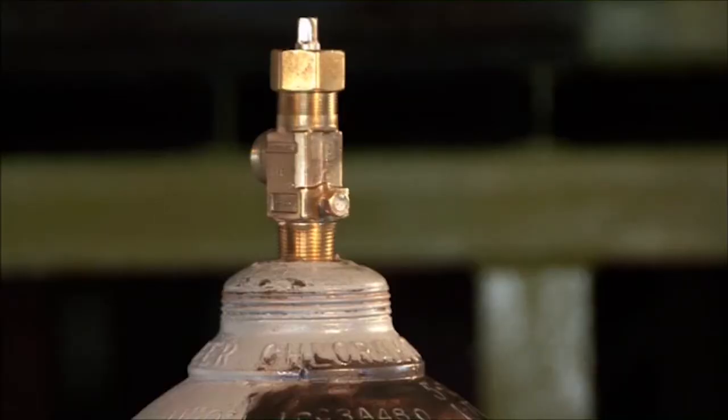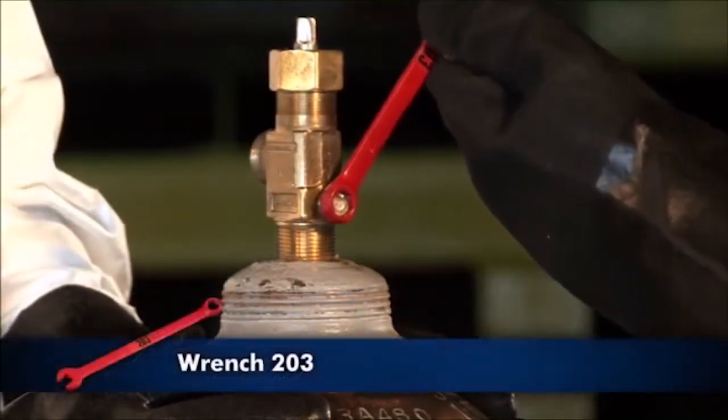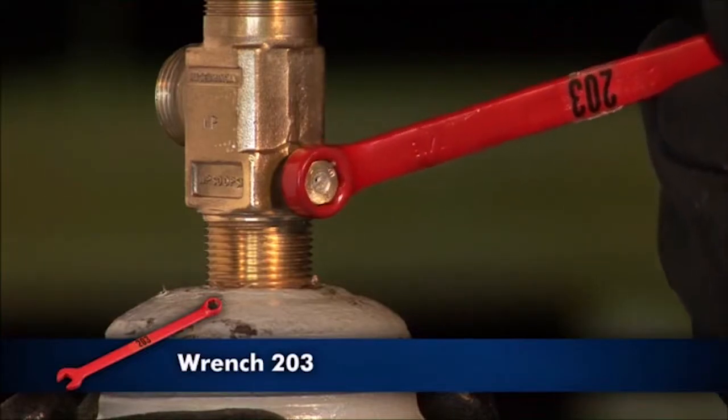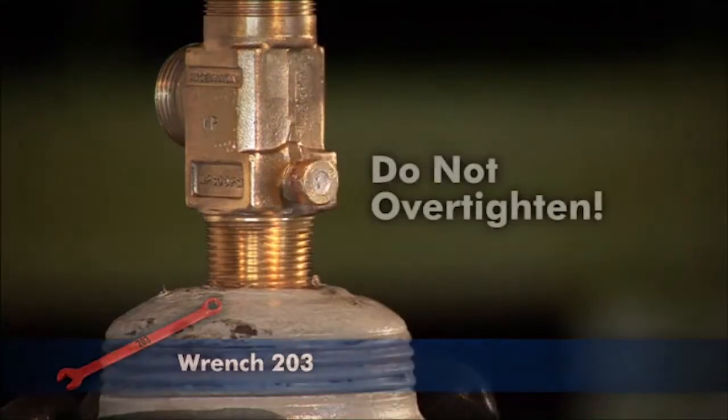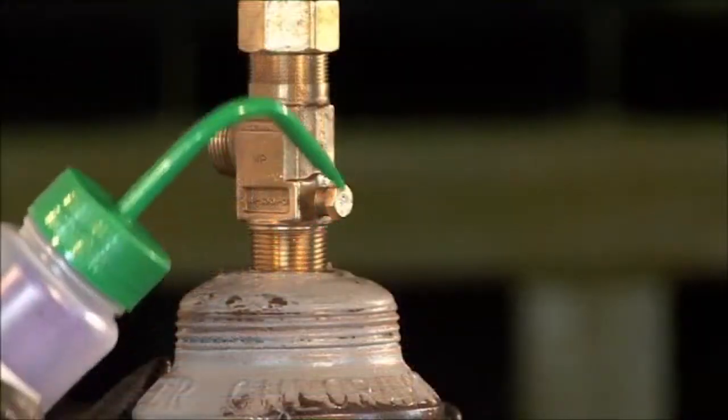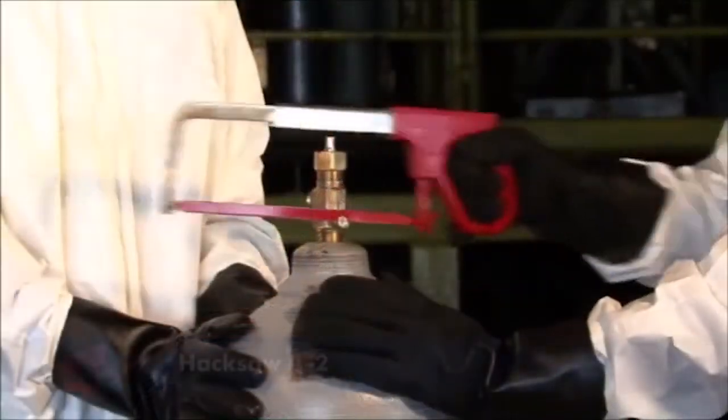If the leak is at the threads of the fusible plug, use wrench 203 and tighten the fusible plug slowly. Do not over-tighten. Test for leaks. If the leak continues,